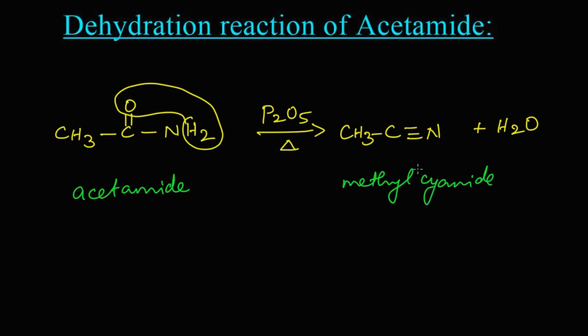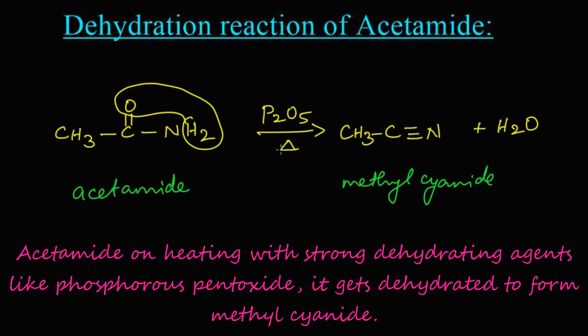Let's summarize the reaction. When acetamide is dehydrated, that is heated in presence of P2O5, that is phosphorus pentoxide, which is a strong dehydrating agent, a water molecule is removed as I shown and we get methyl cyanide as a product.